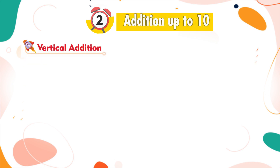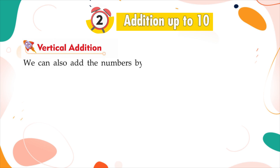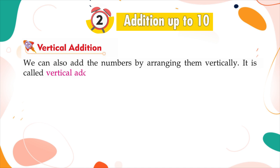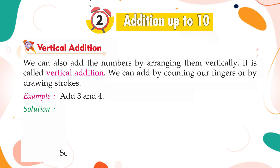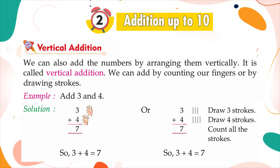Vertical addition: We can also add numbers by arranging them vertically — this is called vertical addition. We can add by counting our fingers or by drawing strokes. Example — add 3 and 4. Solution: 3 plus 4 is equal to 7.